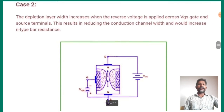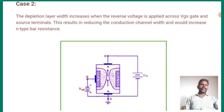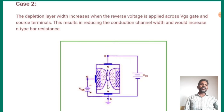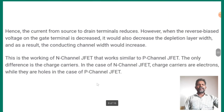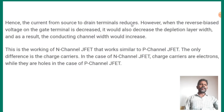Case two: the depletion layer width increases when a reverse voltage is applied across VGS. This is the negative terminal — a negative voltage is applied at the gate source terminal. The result is a reduction in the conduction channel width, which increases the entire bar resistance. If you apply reverse voltage, you will increase the gap and the energy carriers are low. Hence, the current from source to drain terminals is reduced.